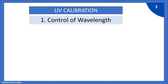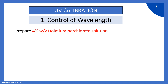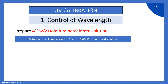Let us see the first parameter: control of wavelength. In this, we first prepare a 4% weight by volume Holmium perchlorate solution. For preparation, we weigh 1 gram of Holmium oxide and transfer to a 25 ml volumetric flask. We dissolve this 1 gram of Holmium oxide in 1.4 molar perchloric acid solution, and then make up to volume with the same 1.4 molar perchloric acid solution.